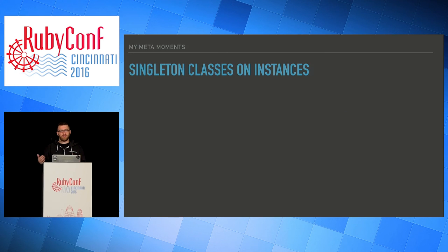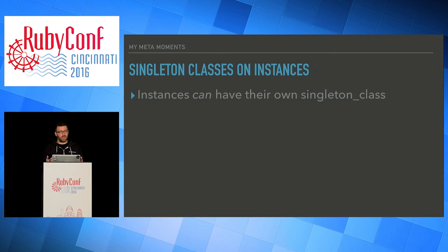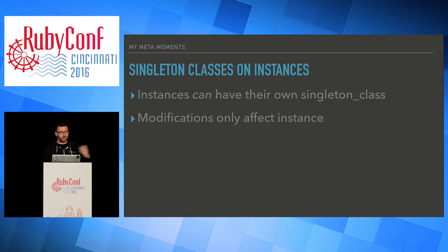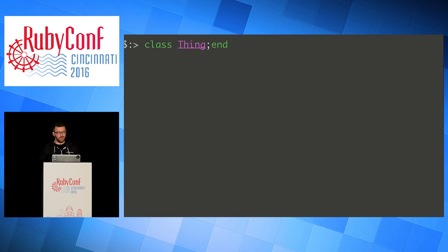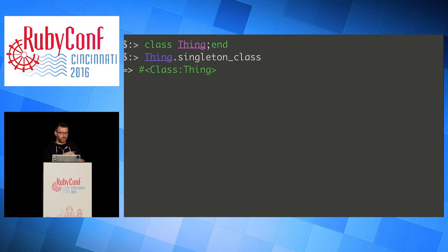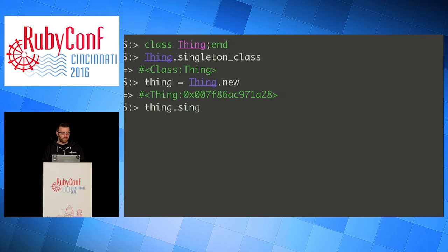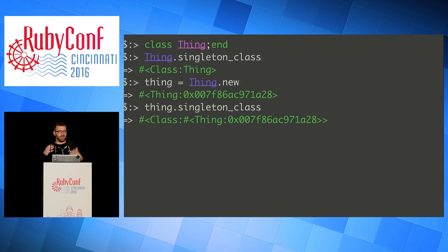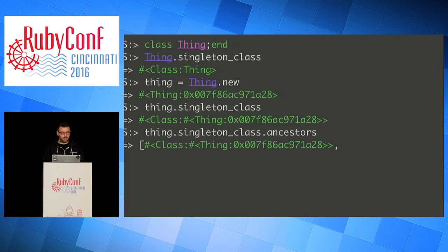When I said you can't define a method on an instance — you can't, but you can — because you can actually get a singleton class on an instance. Instances can have their own singleton class, which is kind of a copy of the parent class they have, but a copy that can be modified. When you modify it, it only affects that instance. We have a thing; looking at the singleton class of an instance of thing gives us a representation that looks like a combination of the class and instance notations. Looking at the ancestors of that singleton class on the instance, we see thing, object, and all the way through BasicObject.